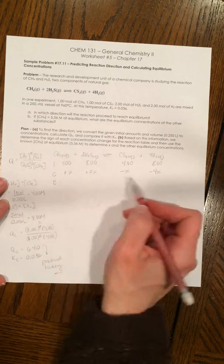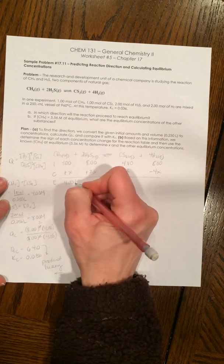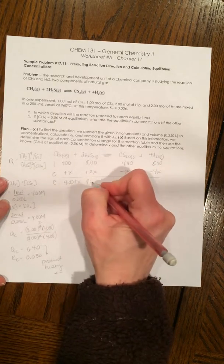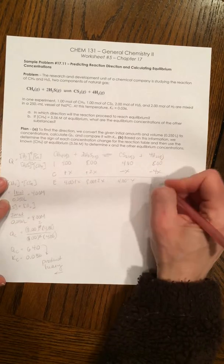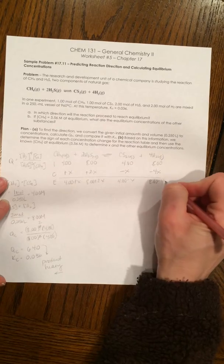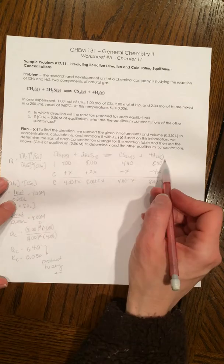Coefficients, again, come down and become part of our variable. So we're going to have 4 plus X, 8 plus 2X, 4 minus X, and 8 minus 4X. Again, these are the equilibrium concentrations for these four species.